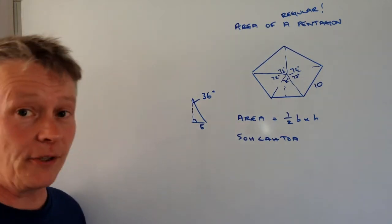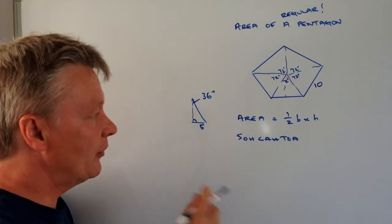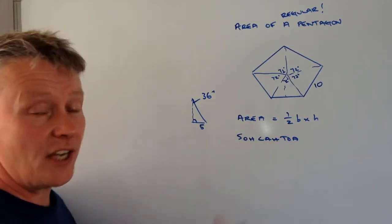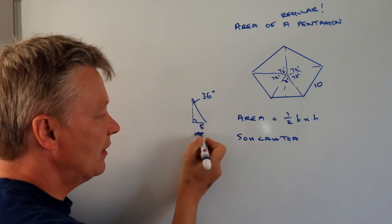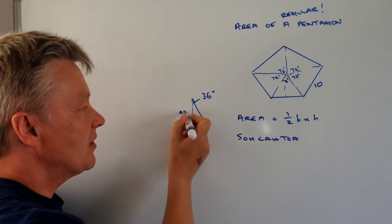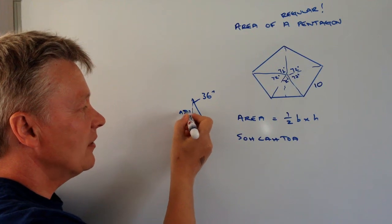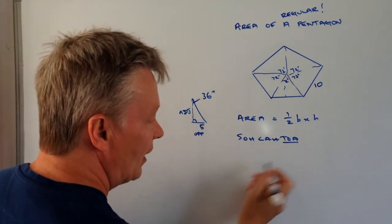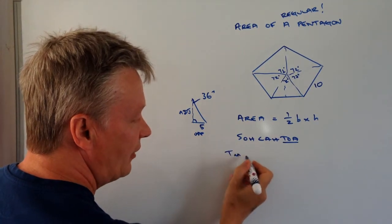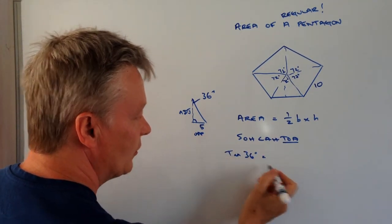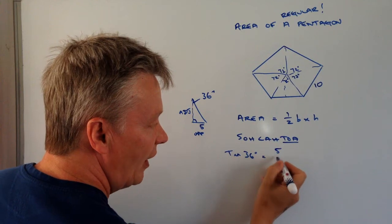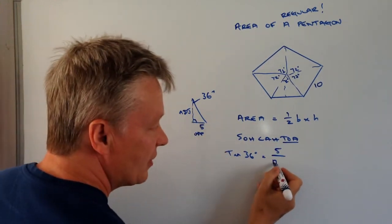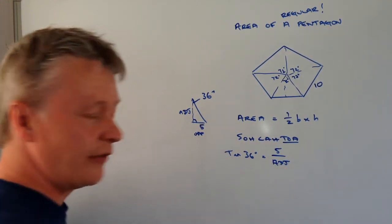Okay, so I'm now in a position where I can use Sokotoa and the relationship I'm going to use is tan. Because this is the opposite and this is the adjacent and it's actually the adjacent that I'm looking to find out. Okay, so let's look at that. So the tan of 36 degrees equals the opposite, which is 5 divided by the adjacent, which is the bit that I'm looking to find out.